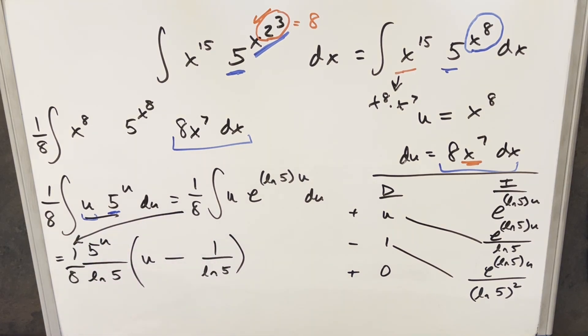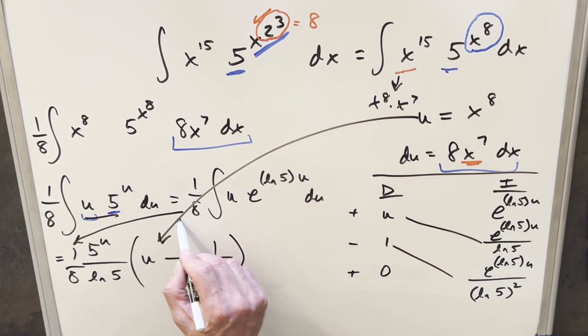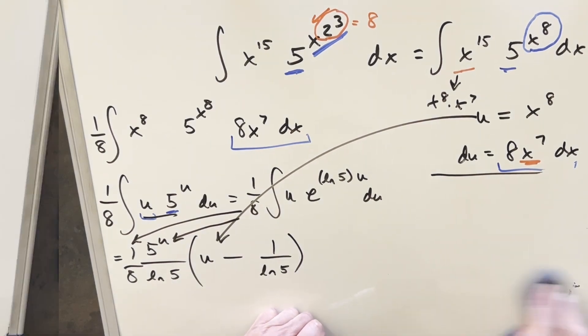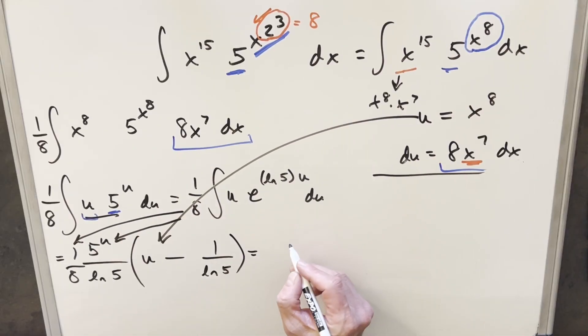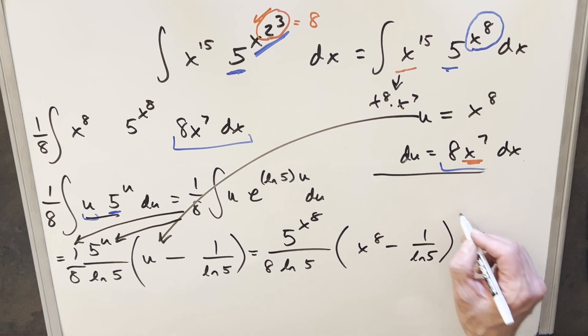And now all we need to do to finish this off is just back substitute with our u equal to x to the 8th. So let me just get a little more space to finish this off. Okay, so plugging in for our final solution here, plugging in for 5 to the u, we're going to have 5 to the x to the 8th over 8 ln 5. This u here is going to give me x to the 8th minus 1 over ln 5, add parentheses, and a plus c, and that's it.